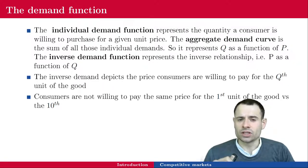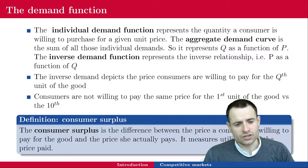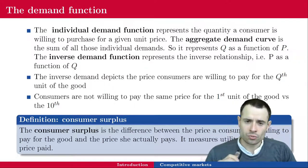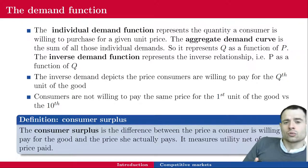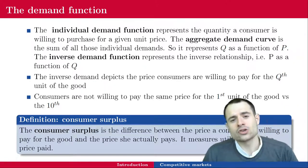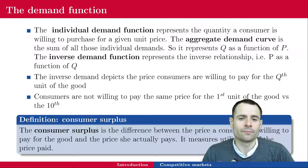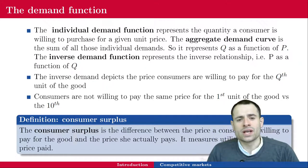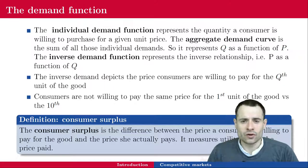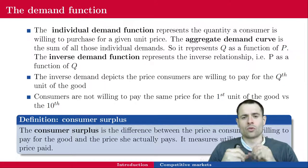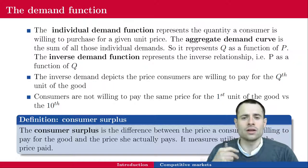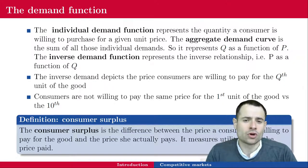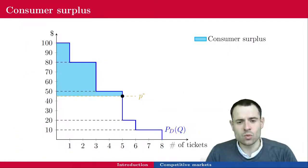With the individual demand function comes the notion of consumer surplus. The consumer surplus is the difference between the price a consumer is willing to pay for the good and the price she actually pays. So it measures utility net of the price paid. Imagine a consumer gets the good for free — all the area under the demand curve will represent his utility. Since he has to pay for the good, you remove the price paid from that area and you obtain the consumer surplus.